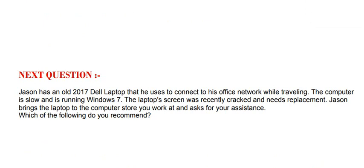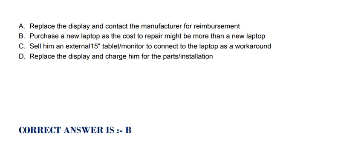Next question: Jason has an old Windows 7 laptop whose screen was recently cracked and needs replacement. Jason brings the laptop to the computer store where you work and asks for your assistance. Which of the following do you recommend? Option A: Replace the display and contact the manufacturer for reimbursement. Option B: Purchase a new laptop, as the cost to repair might be more than a new laptop. Option C: Sell him an external tablet or monitor to connect to the laptop as a workaround. Option D: Replace the display and charge him for the parts and installation. The correct option is Option B.